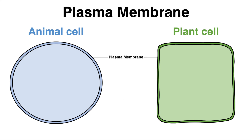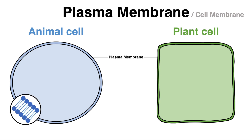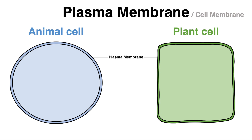Both cells, the plant and the animal cell, possess a plasma membrane, also often referred to as cell membrane. This structure surrounds the cell itself and separates the inside of the cell from the outside environment. The plasma membrane is a phospholipid bilayer that is selectively permeable. Depending on polarity and size, certain molecules can pass through and others cannot. Floating within the phospholipid bilayer are ion and protein transport channels. One of the main functions of the plasma membrane is the regulation of nutrient and mineral transport. The cell membrane also plays an important role in cell signaling and allows the cell to interact with the outside environment.